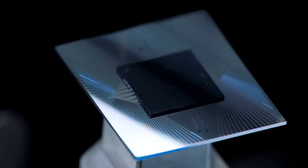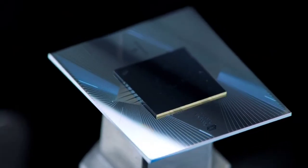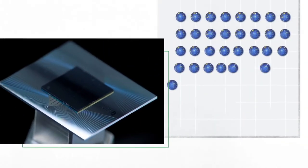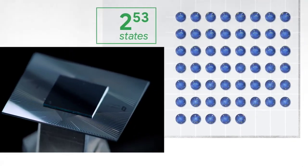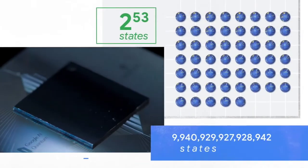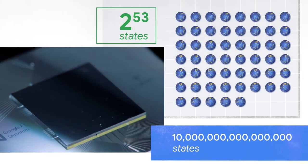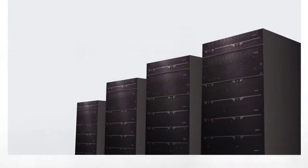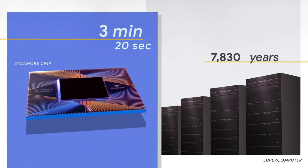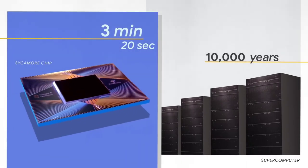The processor that achieved quantum supremacy is called the Sycamore processor. It is parallel processing 2 to the 53 states, which is 10 million billion. That enormous amount of parallel processing is what gives it the power. When we run small chunks of the computation against the largest supercomputer in the world, our estimate is that it will take thousands of years to complete the full computation classically.